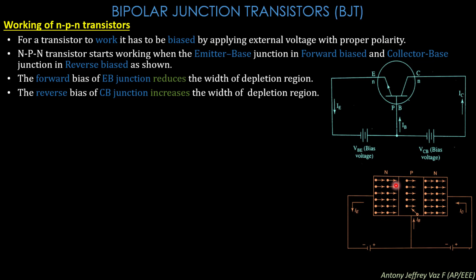The N-type material acts as the emitter, the P-type acts as the base, and the second N-type acts as the collector. The emitter-base region is forward biased and the collector-base region is reverse biased. This causes the emitter-base junction to reduce the depletion region while the collector-base region expands its depletion region due to VBE and VCB voltages.